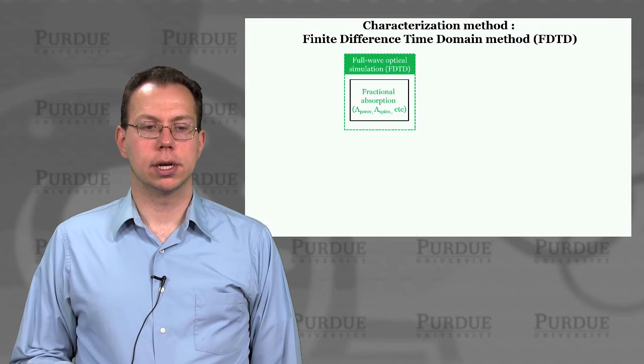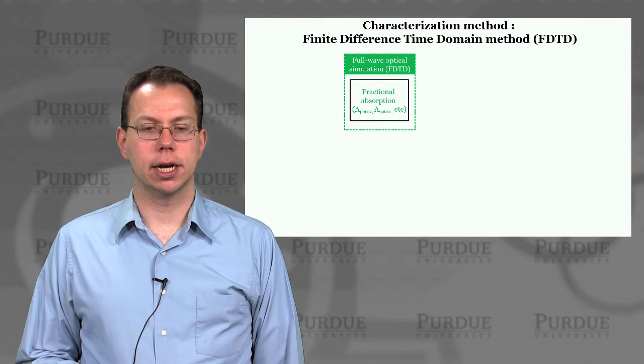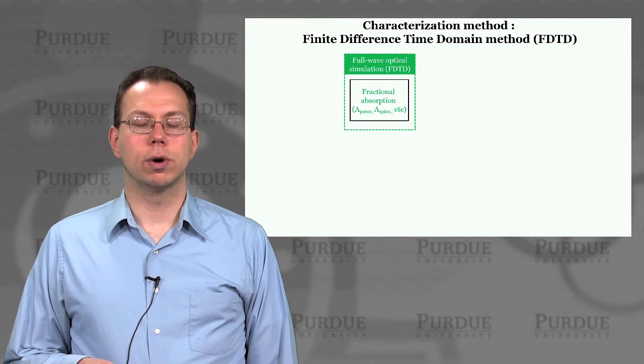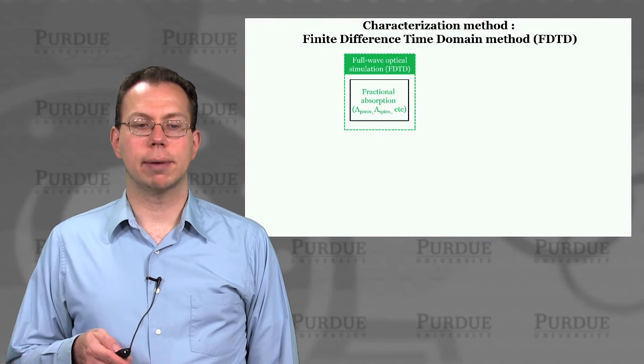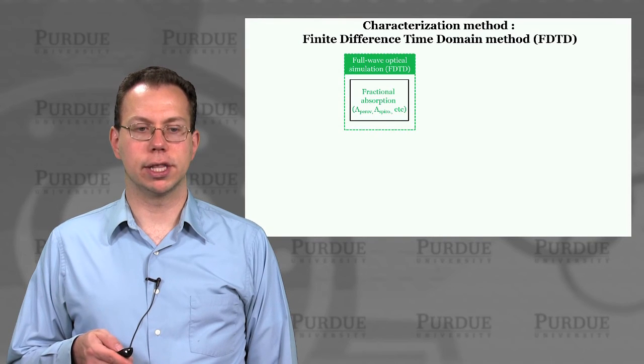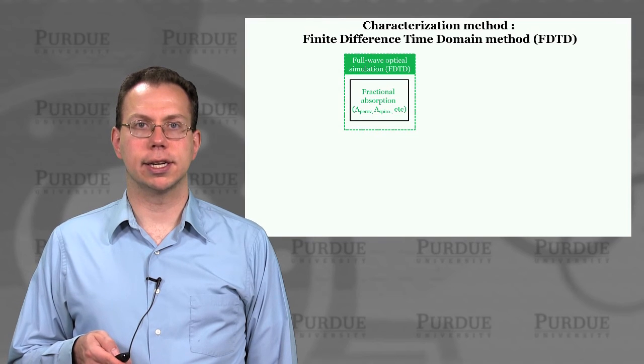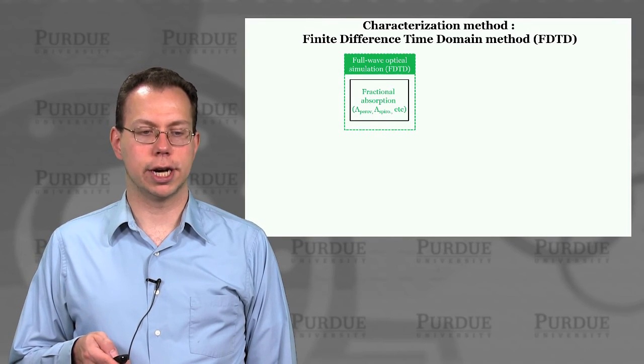And so what is our basic method of characterizing experimental data in finite difference time domain? So one of the key things that we can do, I'll explain in more detail later, is actually capture fractional absorption of certain layers in finite difference time domain, which allows us to tell if a layer is having parasitic optical absorption or not.